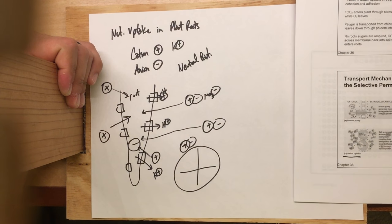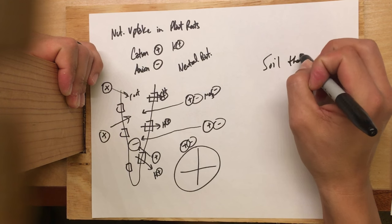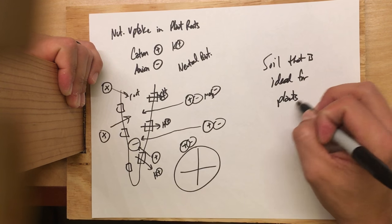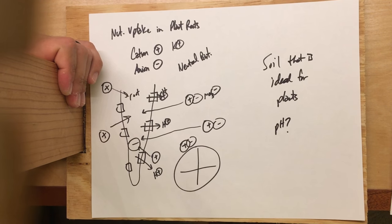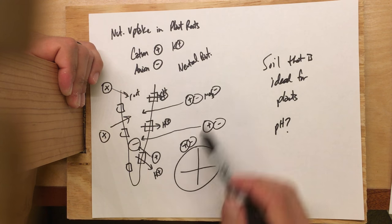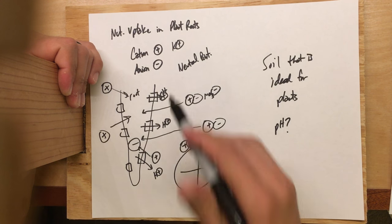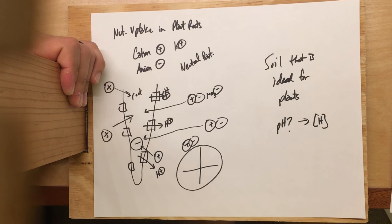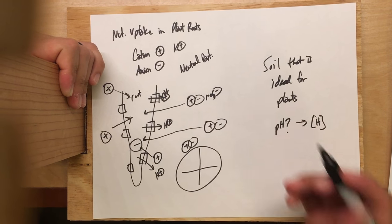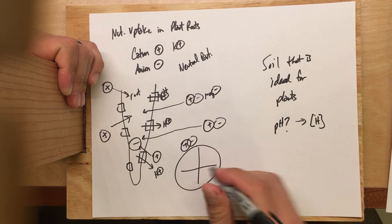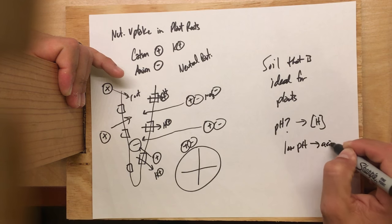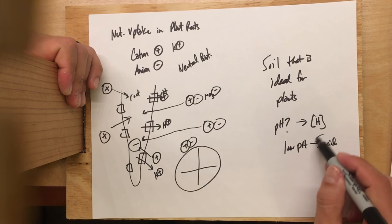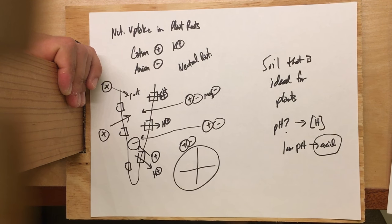This leads to the question: what pH is ideal for plant growth? The more hydrogens in the soil, the more unhappy positively charged ions are and the more they want to enter the roots, triggering uptake of all three particle types. pH measures the concentration of hydrogen ions — protons — in the soil. Because the pH scale is logarithmic and inverted, a high concentration of protons means a low pH, which is acidic. So soils that are best for growing vegetables and crops are typically acidic, with lots of positively charged cations dissolved within them.